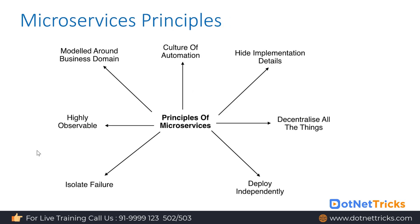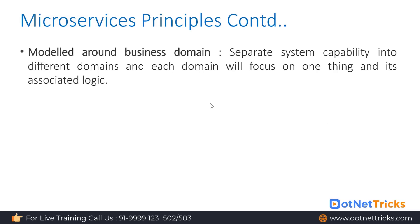Before building microservices you should know the microservices principles: model around the business domain, culture of automation, hide implementation details, decentralize all things, deploy independently, isolate failure, and be highly observable. Let's understand each in detail. Model around the business domain means you should separate the system capability into different domains, and each domain will focus on one thing and its associated logic.